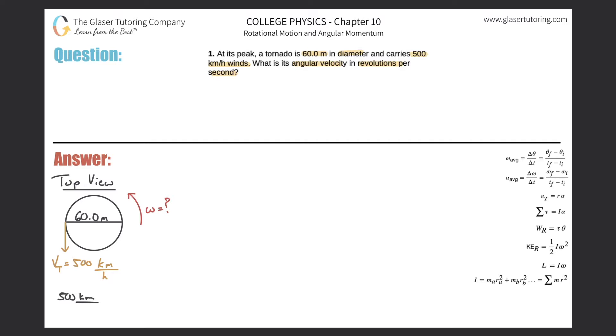So let's actually just do that conversion right now. So 500 kilometers per hour, I'm going to convert that into meters per second. For every one kilometer there's a thousand meters, cancel the kilometers, and then one hour there are 60 minutes, and then in one minute there's 60 seconds.